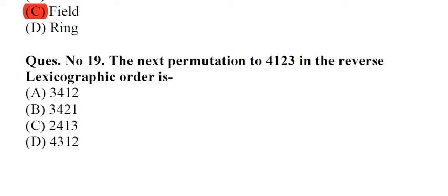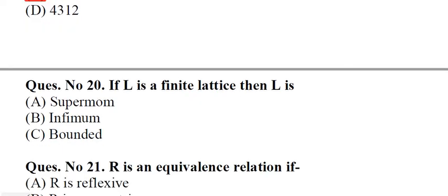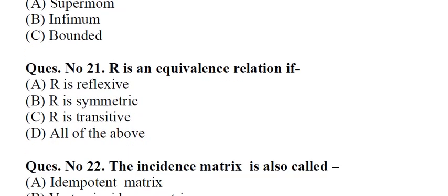Question number 19: The next permutation to 4123 in the reverse lexicographic order is A. 3412, B. 3421, C. 2413, D. 4312. Answer: C, 2413. Question number 20: If L is a finite lattice then L is A. Supremum, B. Infimum, C. Bounded, D. Unbounded.